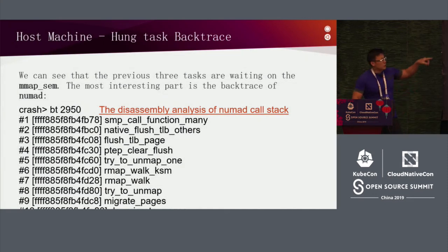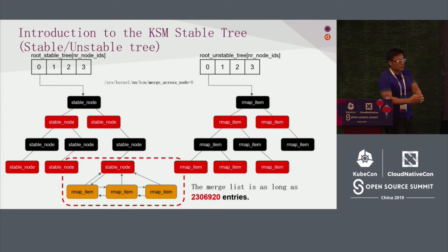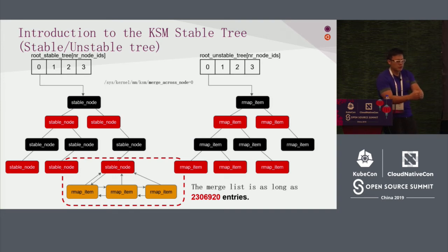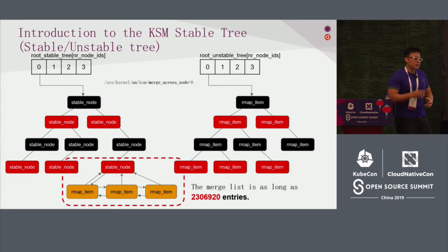KSM has two trees: a stable tree and an unstable tree. When merging pages, if a page is not stable it cannot be merged immediately — it's placed first in the unstable tree. After being scanned twice without change, it moves to the stable tree. In the stable tree, identical pages from many locations are merged into one, and all their PTEs point to that single merged page.